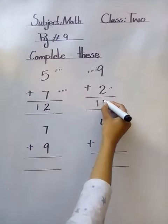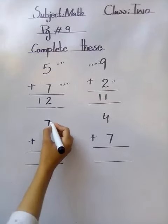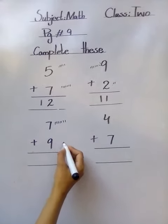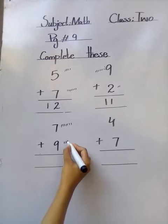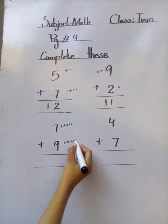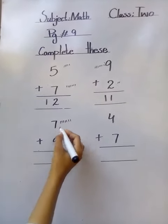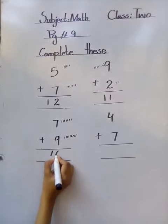Here we will draw seven lines: one, two, three, four, five, six, seven. Here we will draw nine lines: one, two, three, four, five, six, seven, eight, nine. Now count together: nine, ten, eleven, twelve, thirteen, fourteen, fifteen, sixteen. We will write here sixteen.